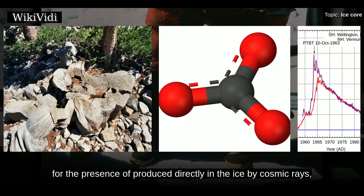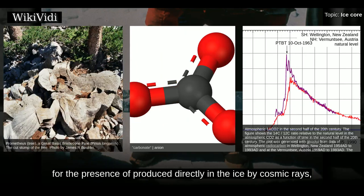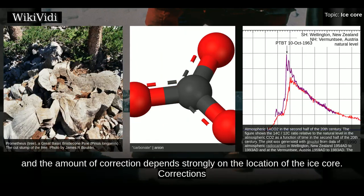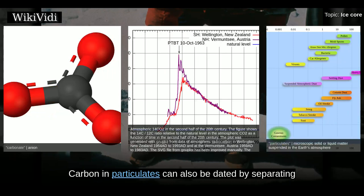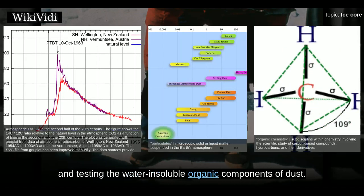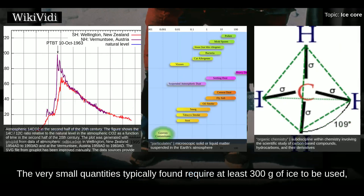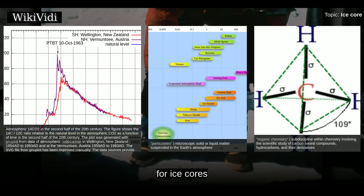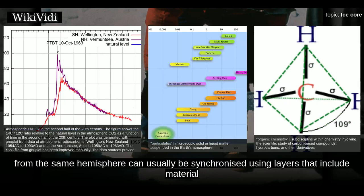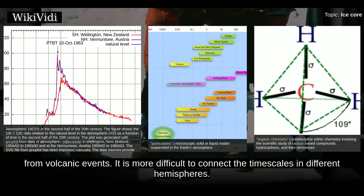The results have to be corrected for carbon produced directly in the ice by cosmic rays, and the amount of correction depends strongly on the location of the ice core. Carbon in particulates can also be dated by separating and testing the water-insoluble organic components of dust. The very small quantities typically found require at least 300 grams of ice to be used, limiting the ability of the technique to precisely assign an age to core depths. Time scales for ice cores from the same hemisphere can usually be synchronized using layers that include material from volcanic events.